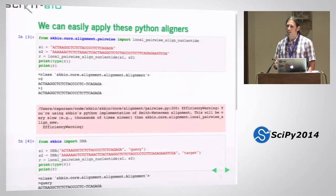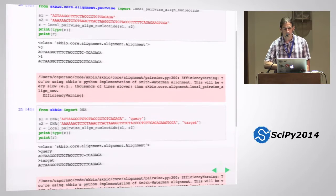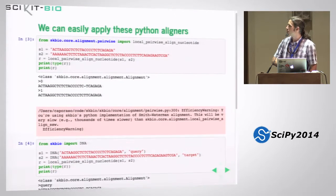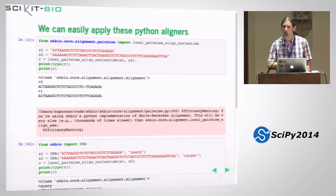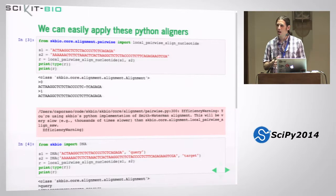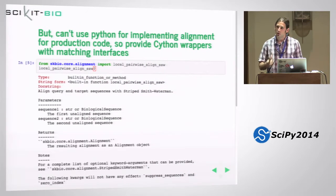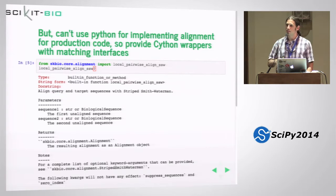Your student can take these aligners, use IPython magic to learn how to use them for a homework assignment, and apply them. When you apply this local alignment function you get a big pink warning message in the IPython notebook — this is essentially a scikit-bio efficiency warning telling us we're using a slow implementation of Smith-Waterman, and it's suggesting we use a different implementation instead: local pairwise alignment SSW, which is a Cython wrapper for a C implementation of Striped Smith-Waterman — the fastest open-source Striped Smith-Waterman implementation.